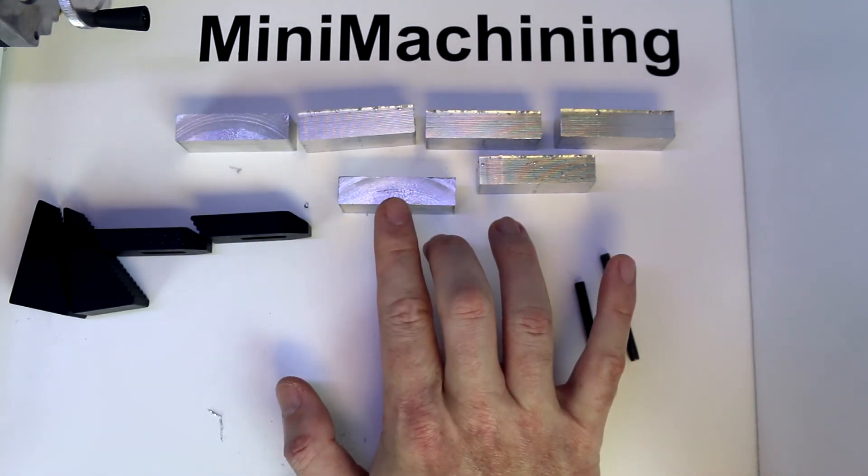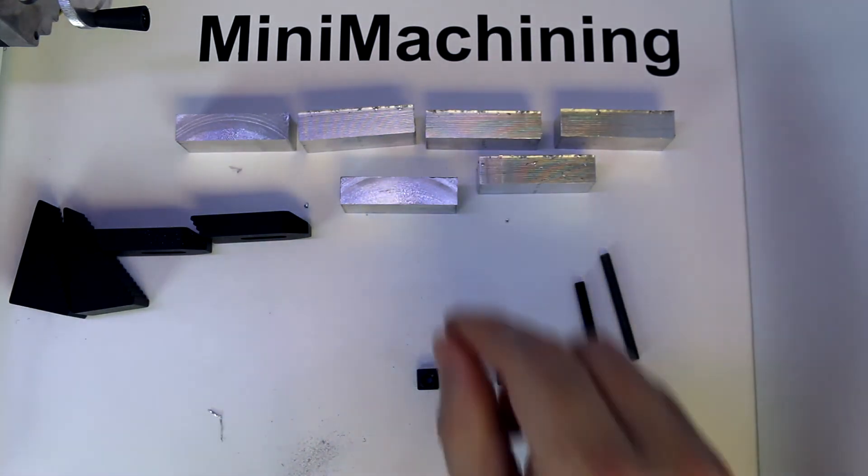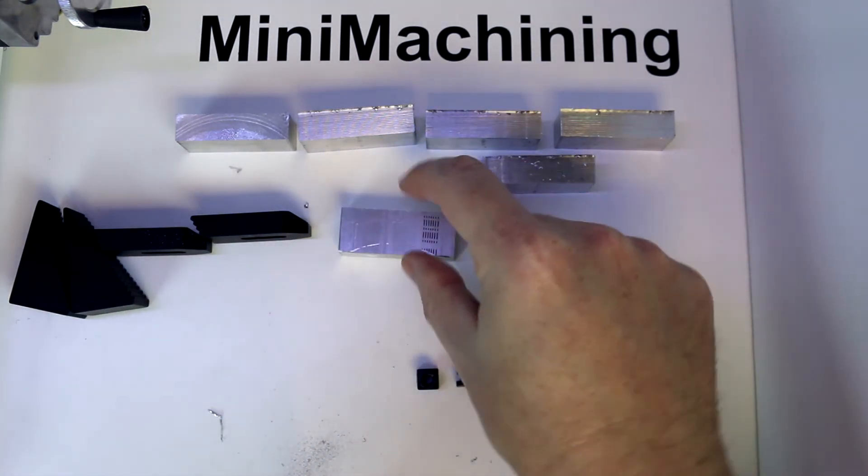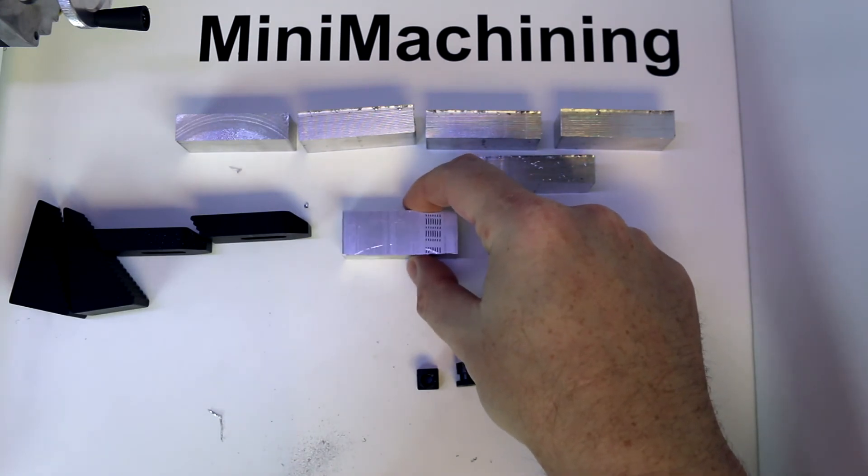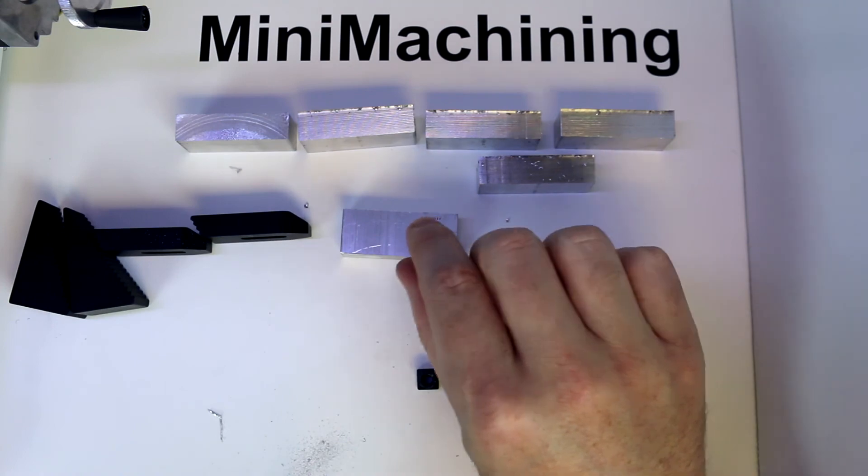But you could also make these out of, say, 1018 steel, for example. And if you're going to go out and buy stock, your best bet is to buy stock that's three-quarters inches wide by half inch or three-eighths inch thick by whatever length you want.